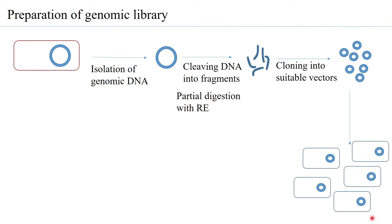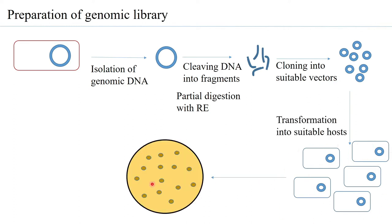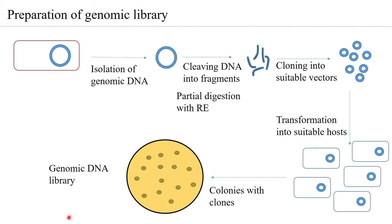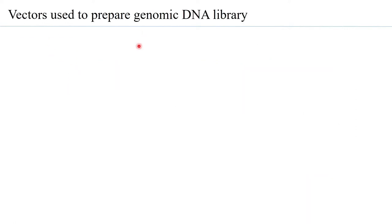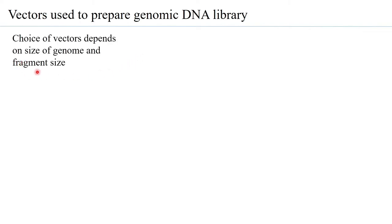The transformed bacteria are grown on a plate and the colonies formed are actually multiple clones of the DNA obtained from the original bacteria. All these colonies observed on the plate are clones of the DNA from that particular organism. Therefore, this becomes the genomic DNA library for that particular bacteria. The vectors used to prepare a genomic DNA library depend on the size of the genome itself.